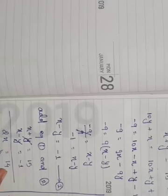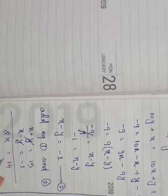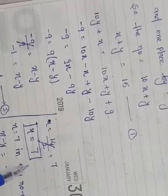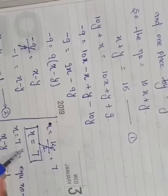Adding these: y cancels with minus y, giving 2x equals 14. Therefore x equals 7.